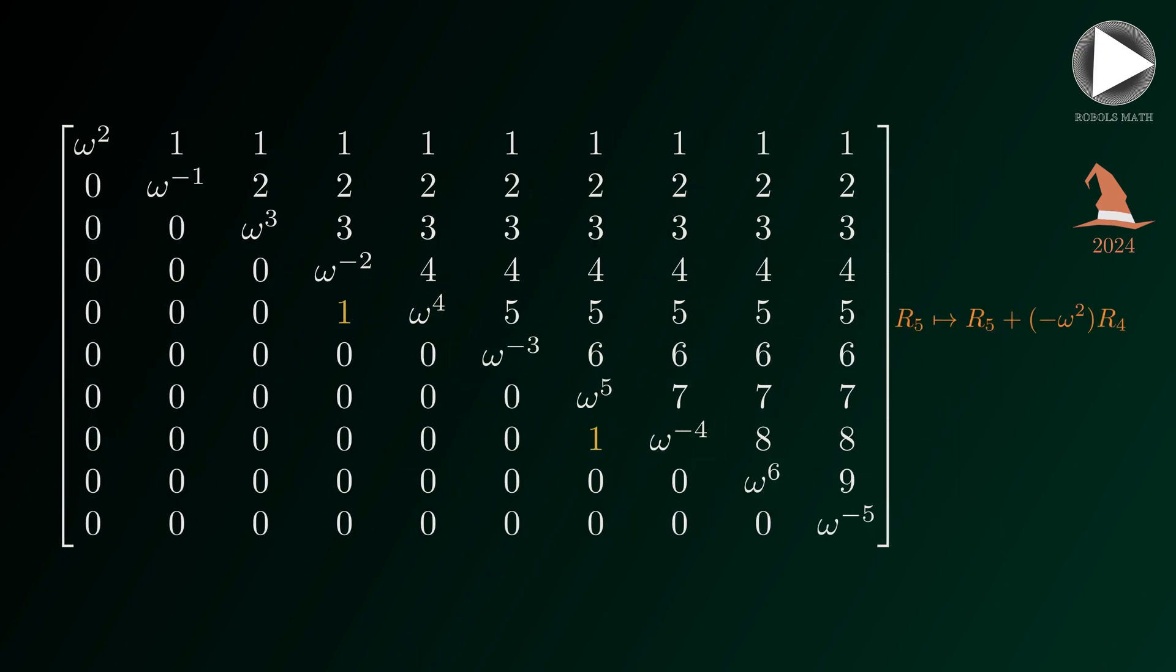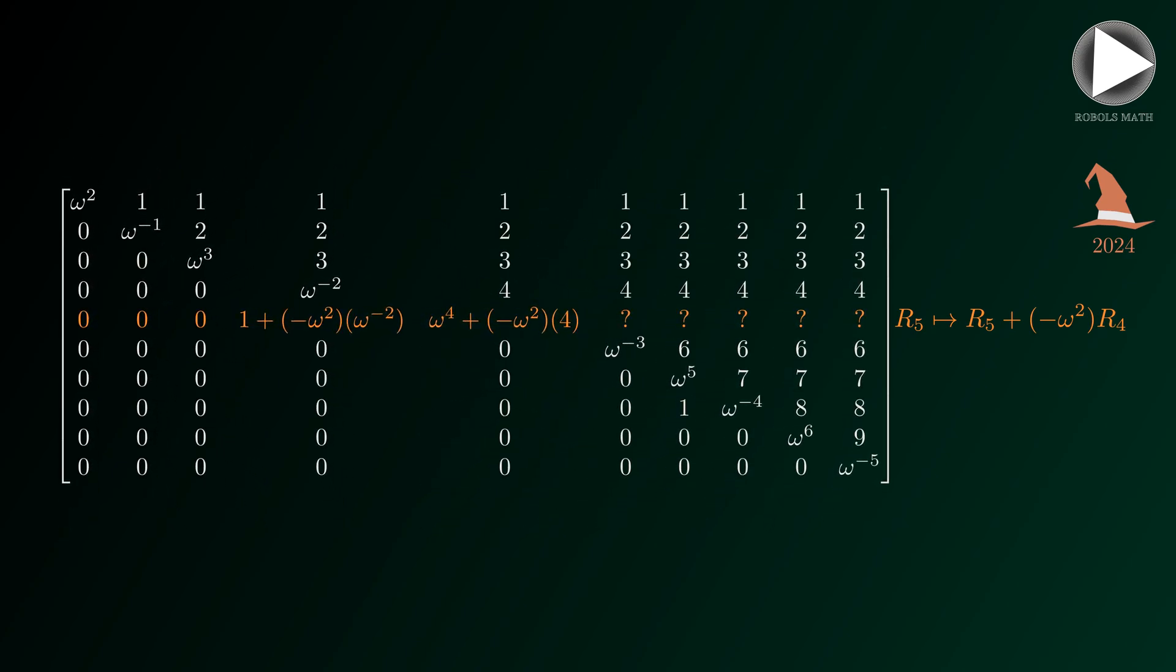We can eliminate the one in the fifth row by adding the negative omega-squared multiple of the fourth row. Note that since we are only interested with the determinant, and only the diagonals matter in the determinants of triangular matrices.